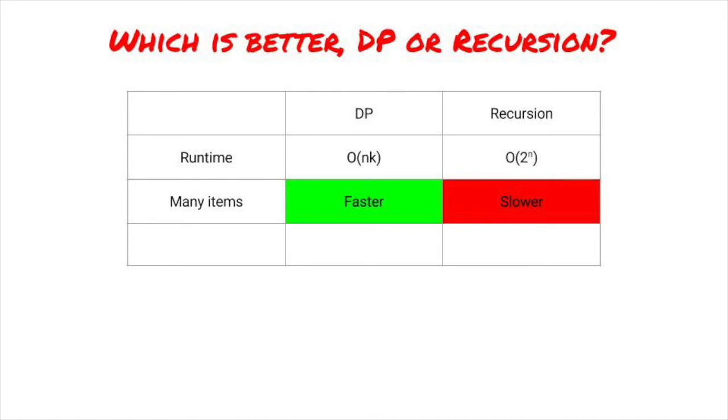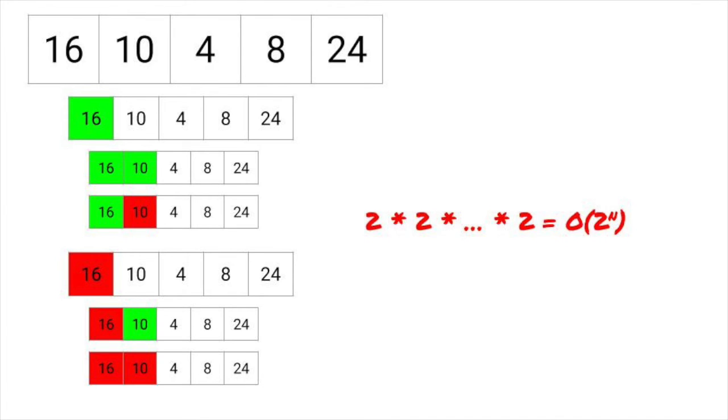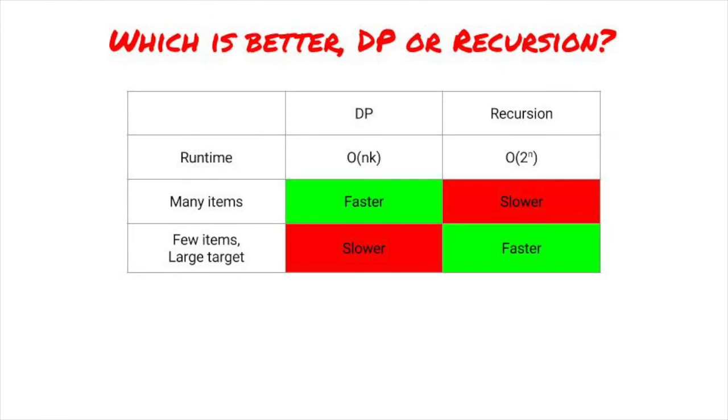But what if our target is large, say millions or billions, and we only have a few elements? We could have a table that's extremely large, billions of numbers, whereas if we did the simple recursive solution, we'd be only looking at 2 to the n for a small value of n. So if the size of the knapsack is very large, 2 to the n may be better. It depends on the use case you're writing for.